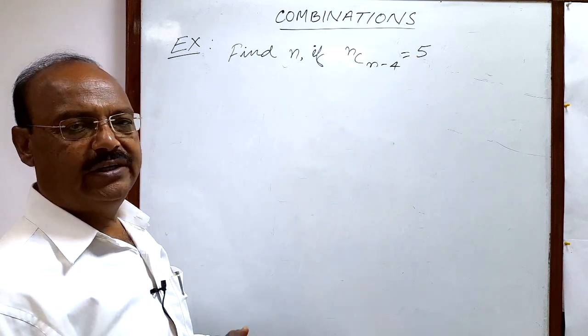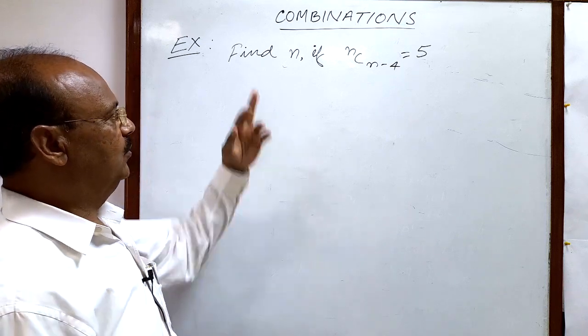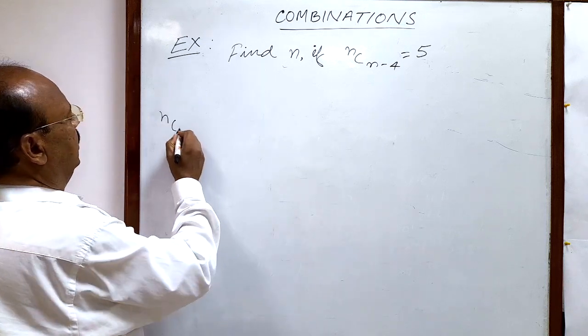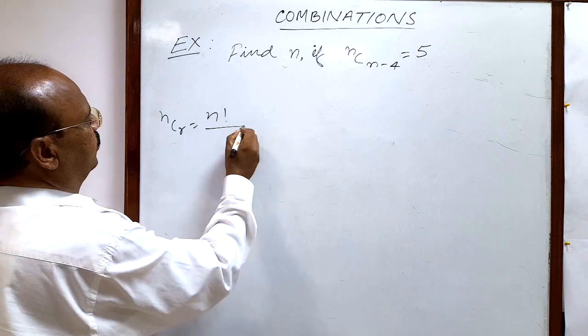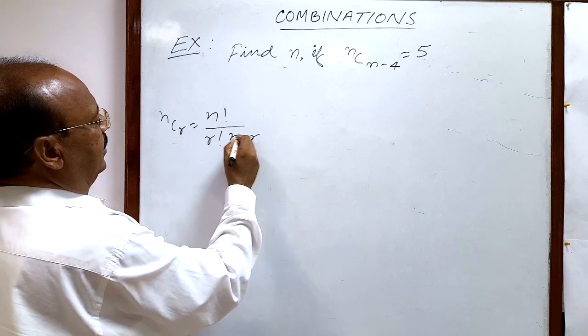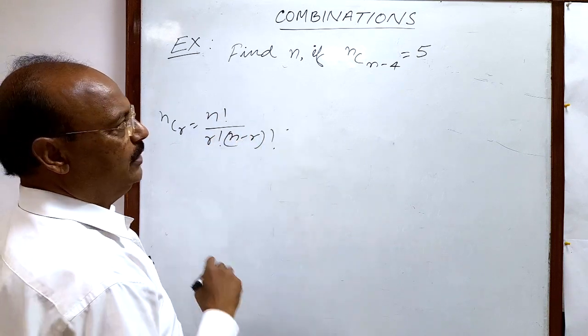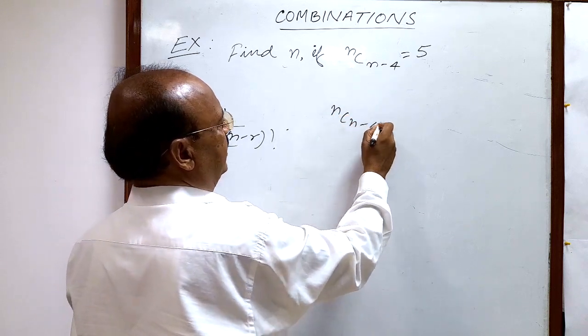formula which we have already studied in previous videos from the topic of combinations, which is nCr equals n factorial by r factorial times (n-r) factorial.